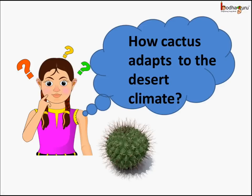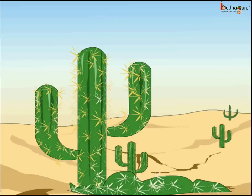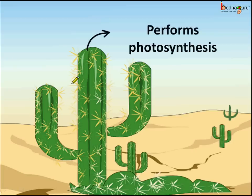Now you must have heard about cactus which grows in the desert climate, and the climate of desert is very dry and hot. So how does the cactus adapt to the desert climate? It is due to the modification of its stem and the leaves. Here we see these are the stems of the plant. The stem here is green in color and flattened like a leaf. This is because in cactus it is the stem which performs the photosynthesis process, meaning it can prepare food.